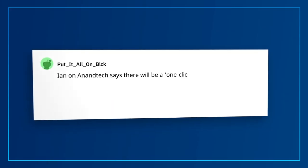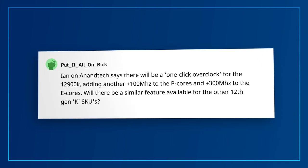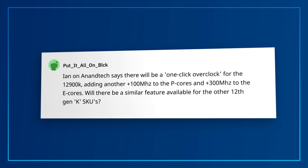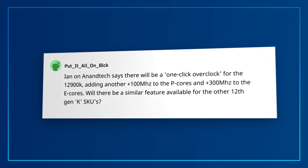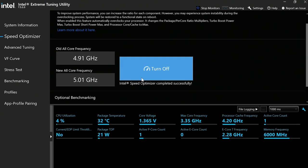Question from Put It All On Black: Ian from Anandtech says that there'll be a one-click overclock for the 12900K, adding another 100 megahertz to the P cores and another 300 megahertz to the E cores. Will there be a similar feature available for the other 12th Gen K SKUs? Yes — Intel Speed Optimizer within the XTU software is that one-click overclocking feature referenced. It is planned to be extended to the i7 K and KF, and the i5 K and KF SKUs on or after version 7.6, but plans are subject to change and should be available coming soon.